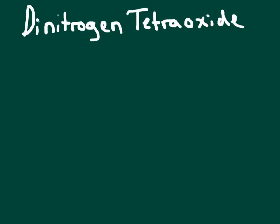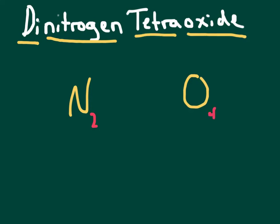Alright, this is a type 3 binary. Type 3 binaries are really simple. You don't even have to worry about any charges. You bring down your parts. You see you've got nitrogen and oxygen. And then you look at the prefixes. Di means 2, tetra means 4. You bring them down, squish them together into N2O4. Dinitrogen tetraoxide. Type 3 compounds are simple.